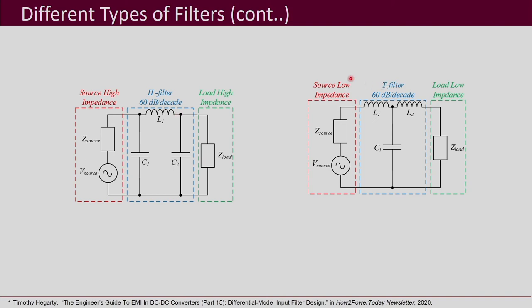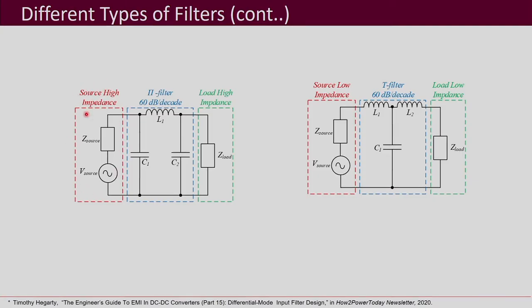The pi filter and T filter are the most commonly used EMI filter topologies. For a pi filter, with high impedance on both source and load sides, place capacitors on both sides and an inductor in between — giving 60 dB per decade attenuation. For a T filter, with low impedance on both sides, place inductors on both sides with a capacitor in the middle.